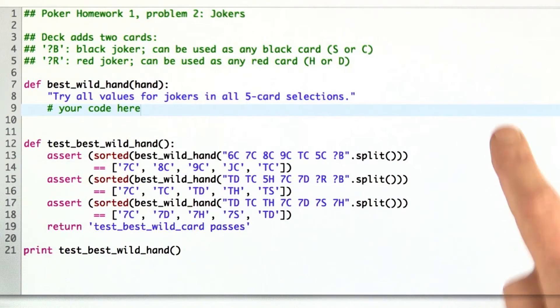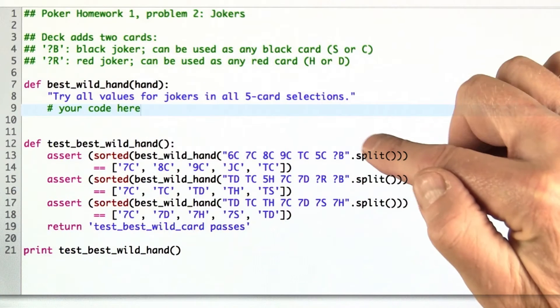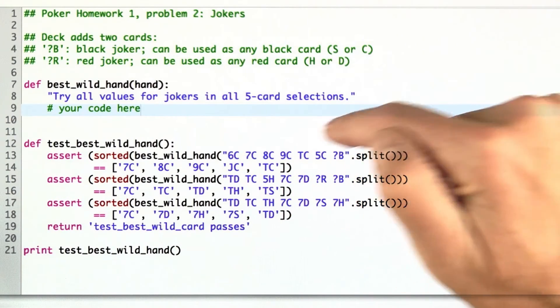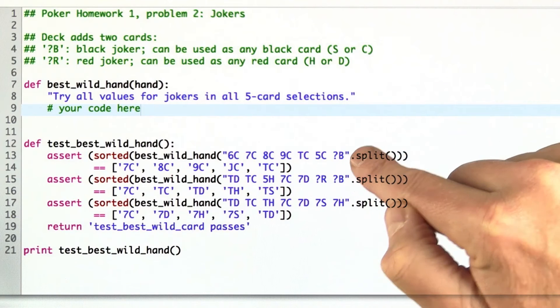Here are some tests. This test says here's a hand where we're doing pretty good. We already have a straight 6, 7, 8, 9, 10, but we also have a wild card,